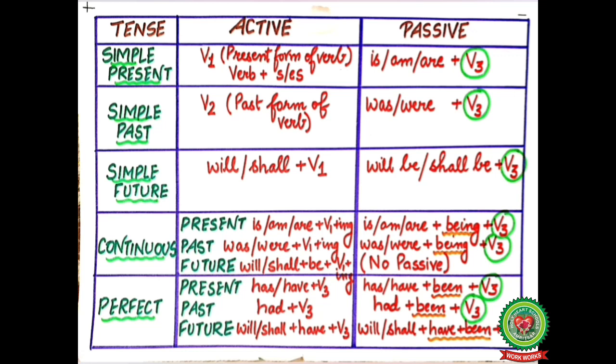If active voice is given in simple future, we will add the word 'be' and 'will' or 'shall' will be changed to 'will be' or 'shall be' followed by past participle. For continuous tense, we will add the word 'being' after the helping verb, and there is no passive form for future continuous tense. V1 plus ing will change into past participle form. For present, past, or future perfect, we will add the word 'been' after has or have, followed by past participle.